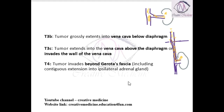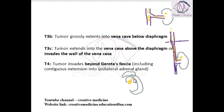Then T4. The kidney is surrounded by Gerota's fascia. If the tumor extends into the perinephric fat, and even if it extends into Gerota's fascia and into the adrenal gland, then it is T4.